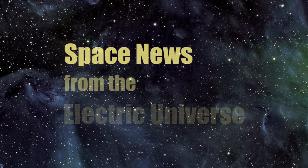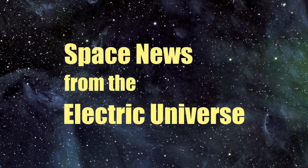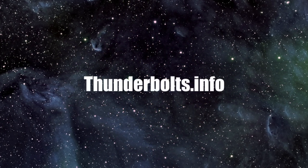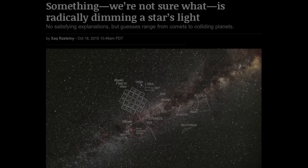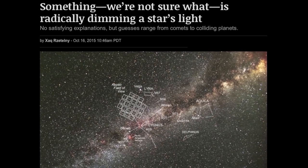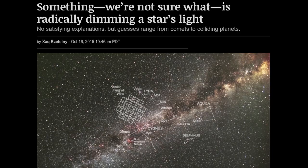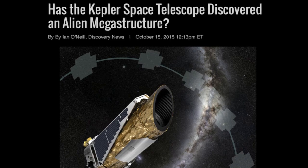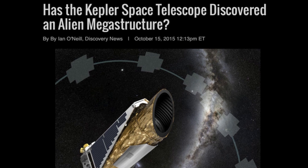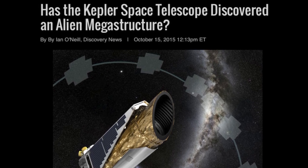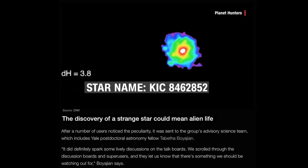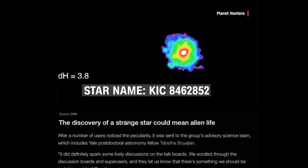Welcome to Space News from the Electric Universe, brought to you by the Thunderbolts Project at Thunderbolts.info. In recent months, a mysterious star has created a firestorm of media speculation. In October, news headlines around the world suggested that the star might be surrounded by a so-called alien megastructure. The nature of the mystery is a seemingly impossibly rapid dimming of the star — impossible under standard stellar theories.